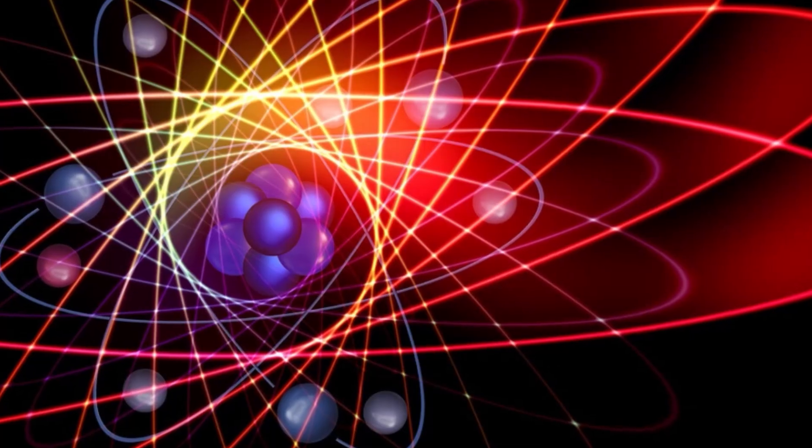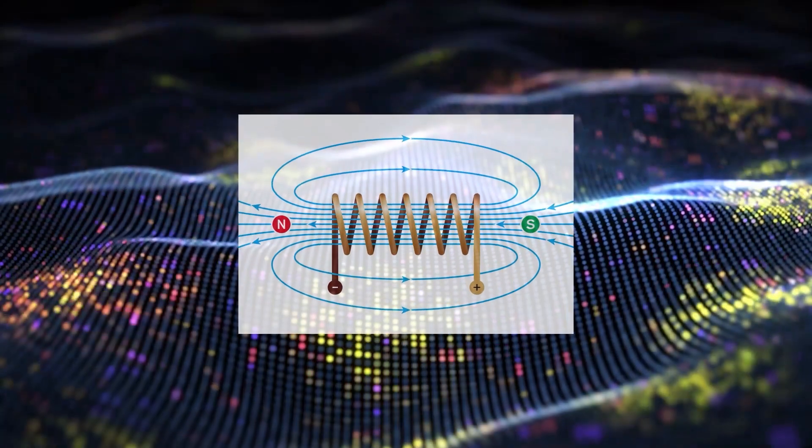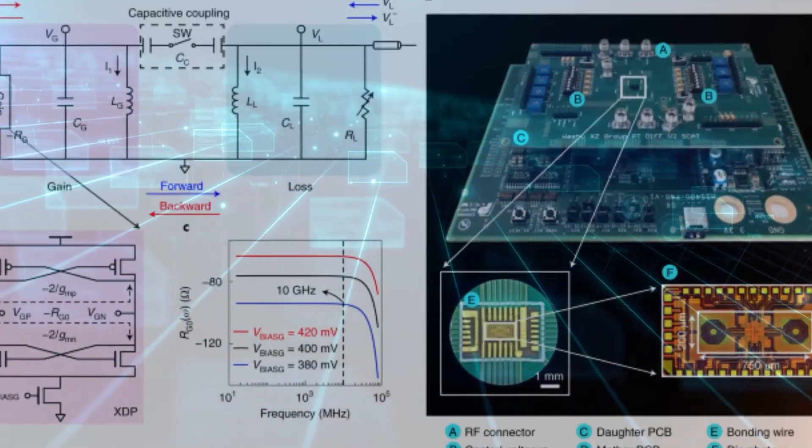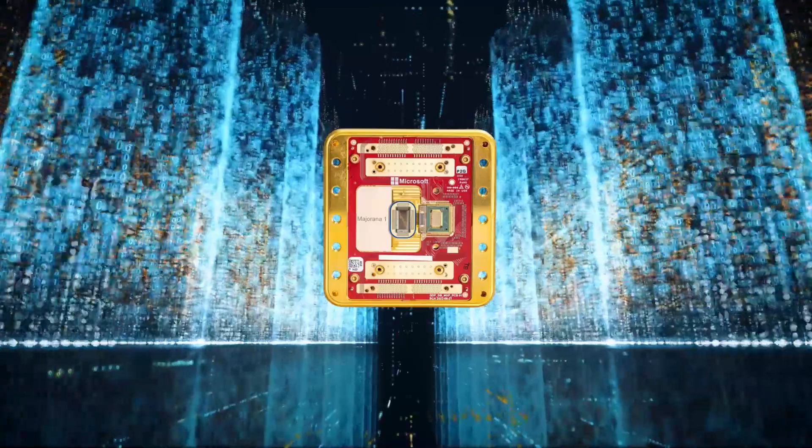Here's where it gets weird. Each Majorana mode is half of an electron's information, meaning that, effectively, the same electron exists at both ends of the wire at the same time. This is what makes it so resistant to errors. Instead of all the quantum information being stored in a single point, it's spread out across the wire, making it naturally more robust.